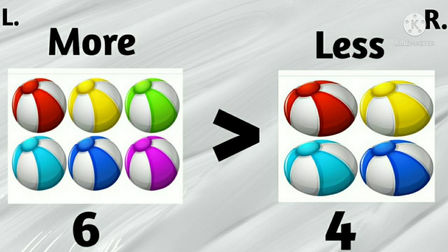So in this picture, there are 6 balls on the left side and 4 balls are on the right side. So we can say the left side has more number of balls and the right side has less number of balls.